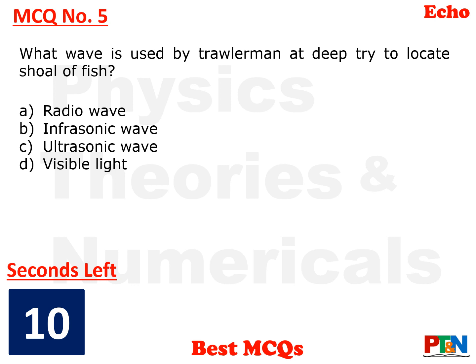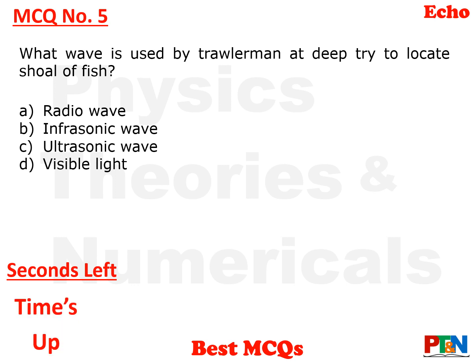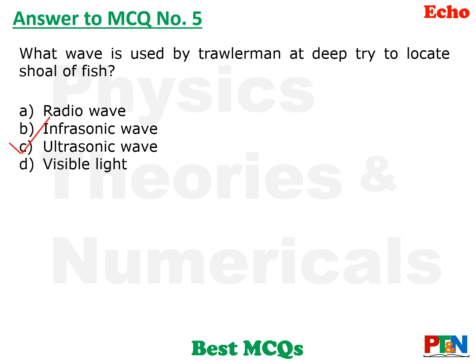Next MCQ: What wave is used by a trawlerman at deep sea to locate shoal of fish? Four wave types are given. The answer is Option C — ultrasonic waves.